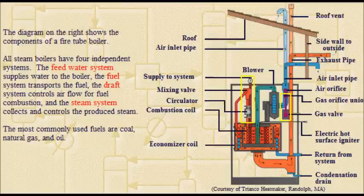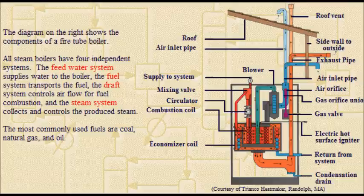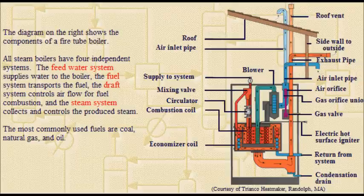All steam boilers have four independent systems. The feed water system supplies water to the boiler; the fuel system transports the fuel; the draft system controls air flow for fuel combustion; and the steam system collects and controls the produced steam. The most commonly used fuels are coal, natural gas, and oil.